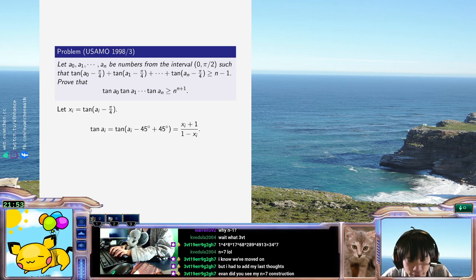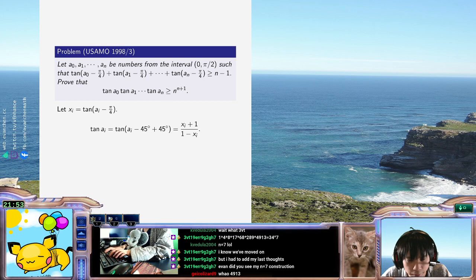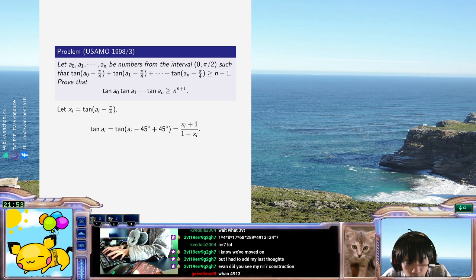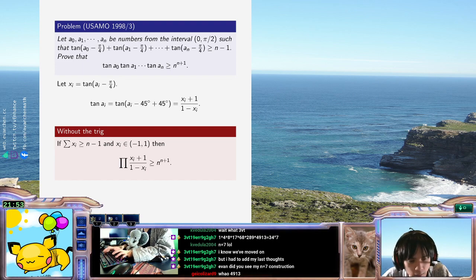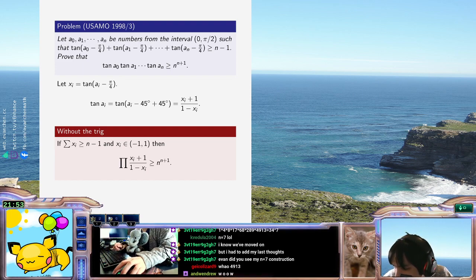Okay, so the problem is saying that, without the trig, if sum of x_i is at least a minus one, then product of x_i plus one over one minus x_i. Okay, so now I have to check x_i are in the interval of minus one to one, right? Yeah, minus one to one. Okay, so that's the rephrased problem. And... well... do I just use Jensen?